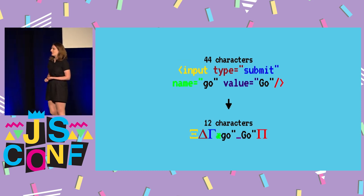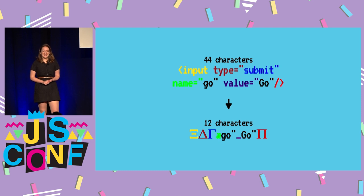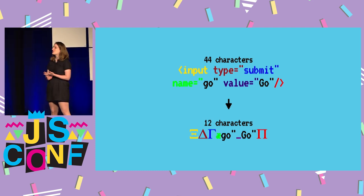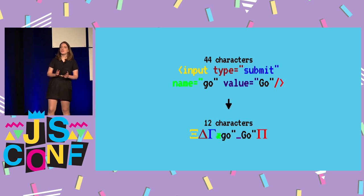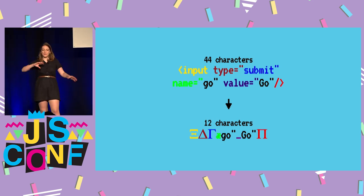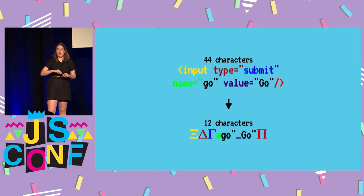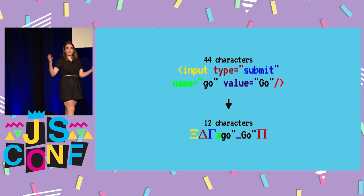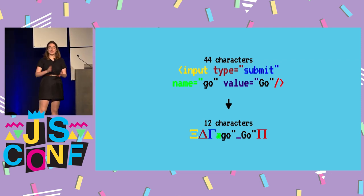The last compression method is using Greek characters. One great thing about the SMS character set is that it allows Greek characters, and most websites I visit don't have Greek characters on them. Because we have such a small subset of HTML tags and attributes, I mapped all combinations to different Greek characters. So bracket-input maps to one character, 'type equals quotation mark' maps to another. We know 'type' is always followed by equals and a quotation mark, so we can combine them — and we have enough Greek letters to do this explicit mapping, which shortens things quite a bit.